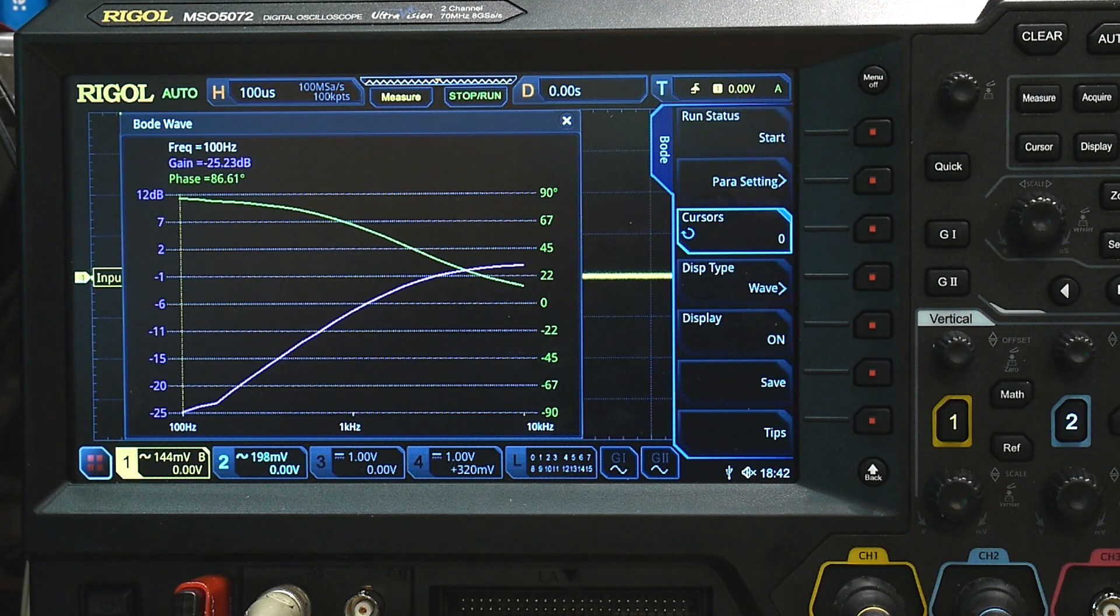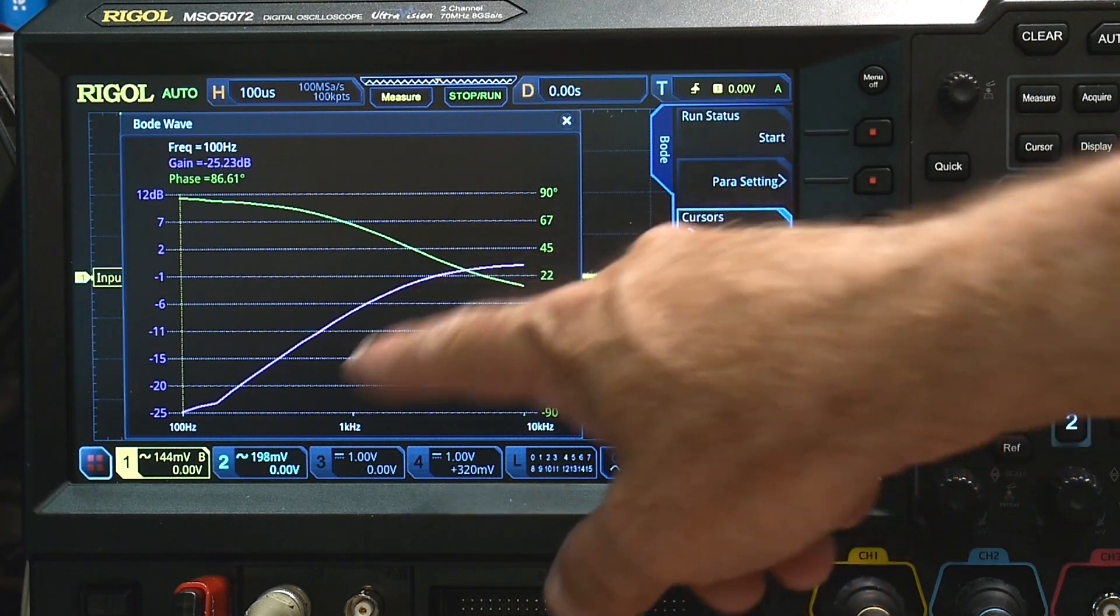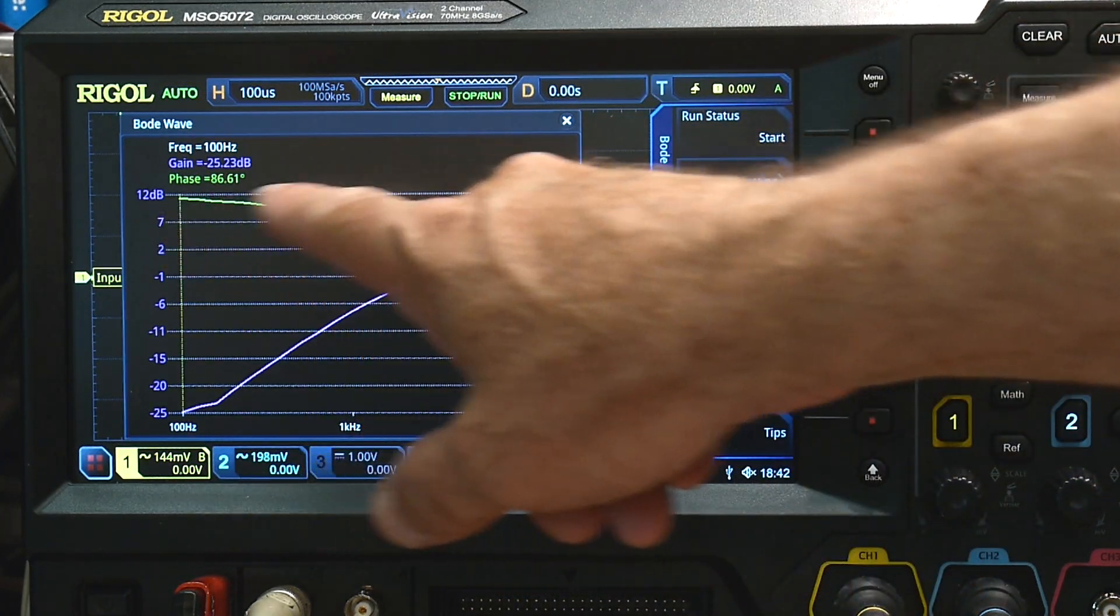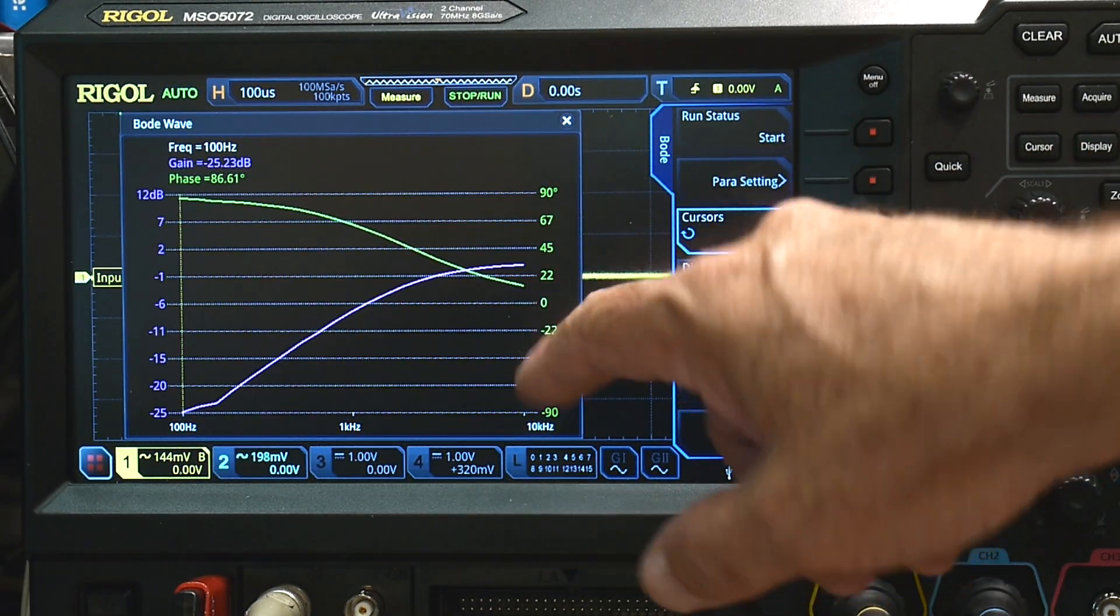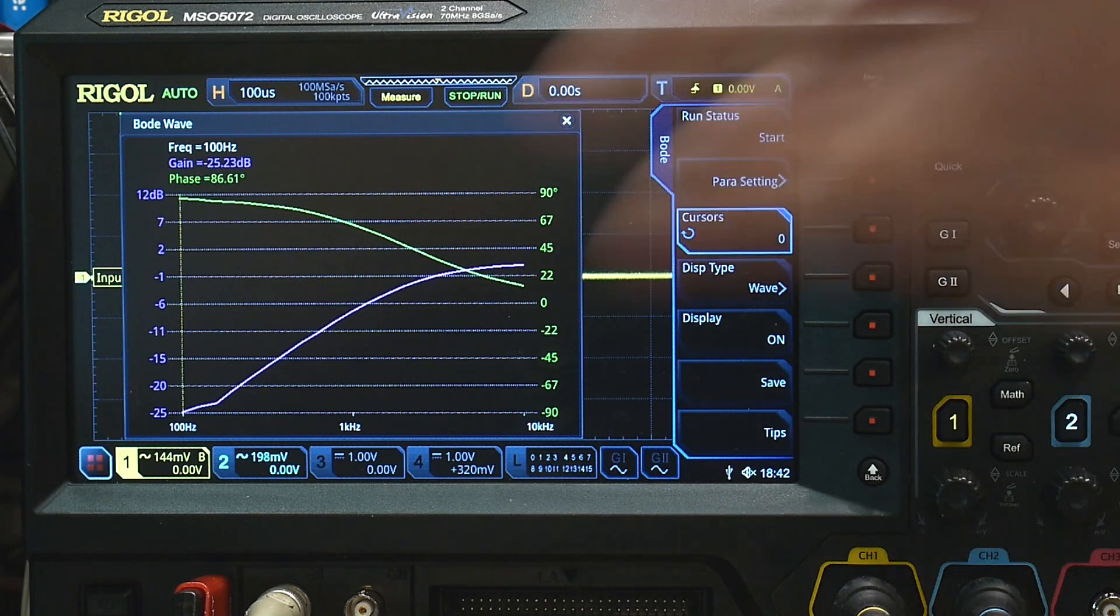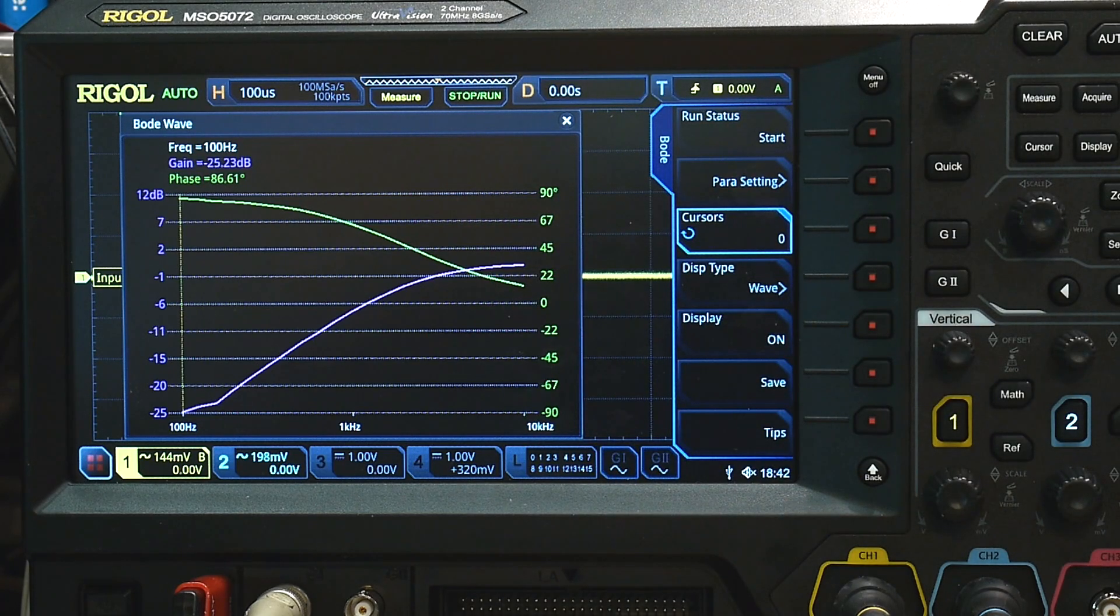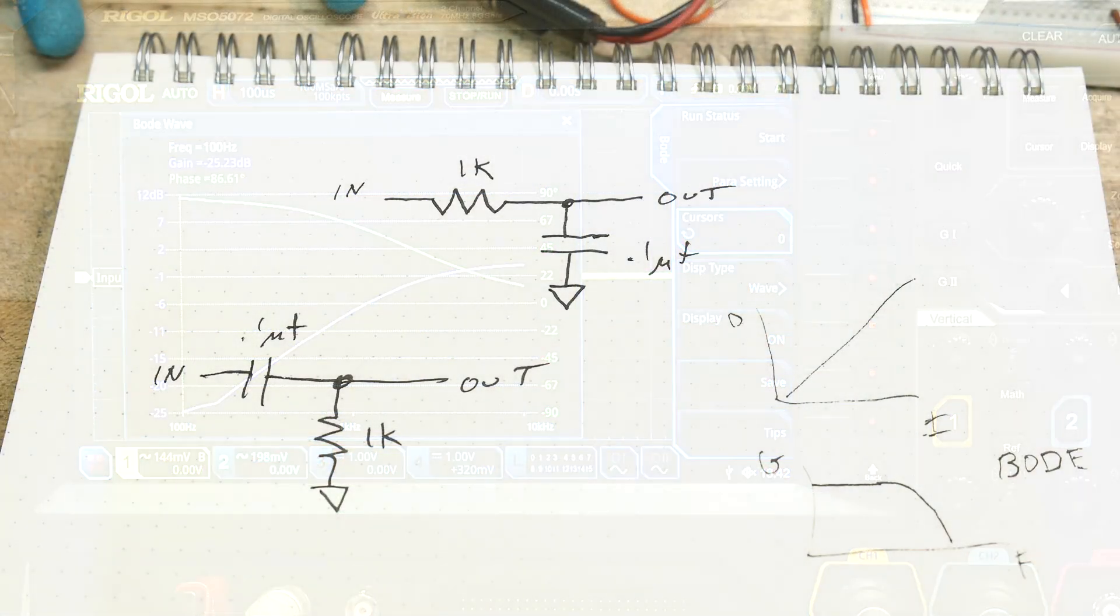And so we've come to a level off spot. You can watch the phase go from a 90 degree shift down to a small shift. If we let this go farther, it would go down to zero.